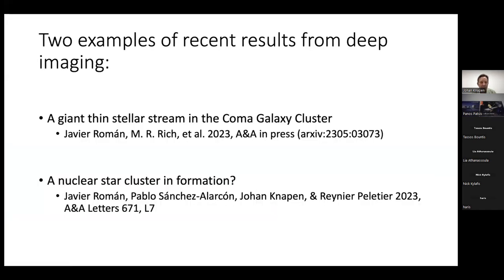We can deal with most of these issues: we can model the scattering, subtract the background, mask sources, and look for sky patches where the cirrus is less of a problem. To give two examples of recent results from deep imaging, I want to highlight two works led by Javier Roman, a postdoc in our group working with Groningen. The first paper is called 'A Giant Thin Stellar Stream in the Coma Galaxy Cluster,' which is in press but on the archive, by Javier Roman, Michael Rich, and several others.